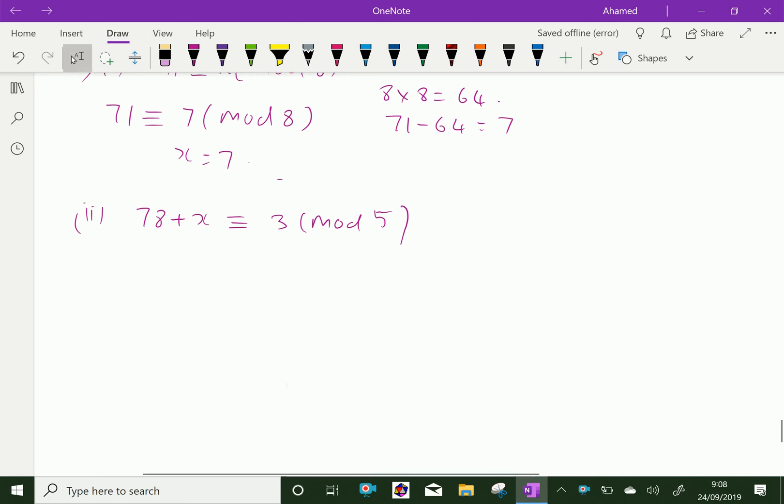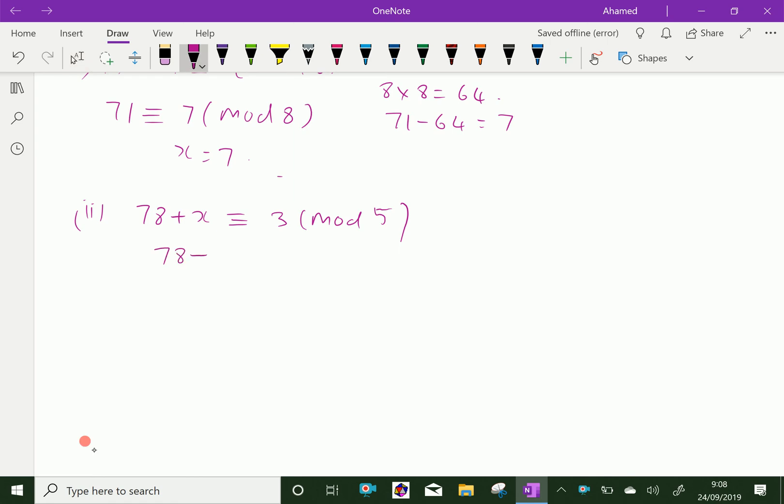Here, this is a multiple of 5. Therefore, you can write 78 plus x minus 3, because 3 goes to that side, minus 3 is equal to 5 times n, where n is any integer.